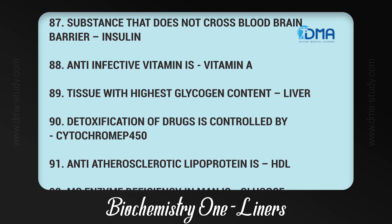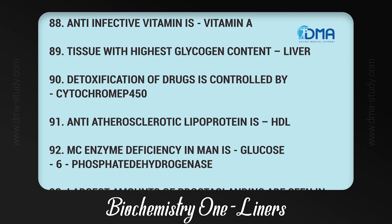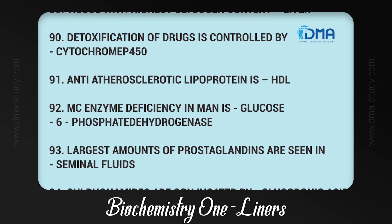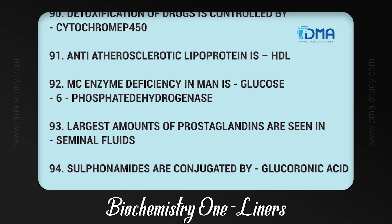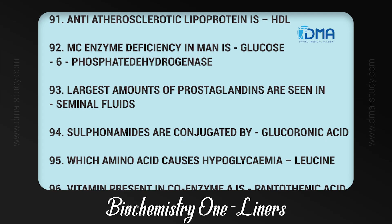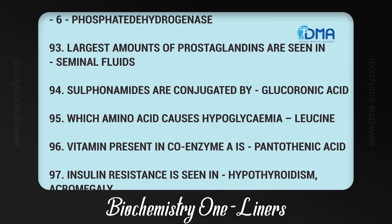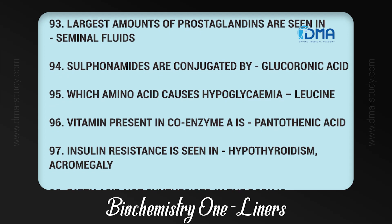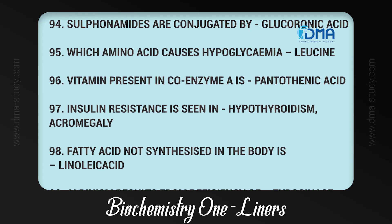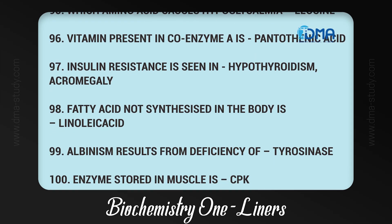90. Detoxification of drugs is controlled by cytochrome P450. 91. Anti-atherosclerotic lipoprotein is HDL. 92. Most common enzyme deficiency in man is glucose-6-phosphate dehydrogenase. 93. Largest amounts of prostaglandins are seen in seminal fluids. 94. Sulfonamides are conjugated by glucuronic acid. 95. Amino acid that causes hypoglycemia is leucine. 96. Vitamin present in coenzyme A is pantothenic acid. 97. Insulin resistance is seen in hypothyroidism and acromegaly. 98. Fatty acid not synthesized in the body is linoleic acid.